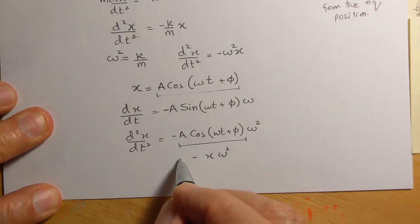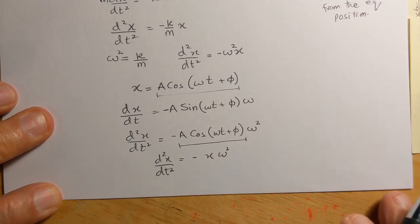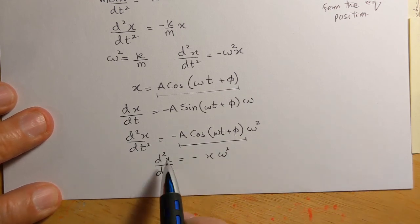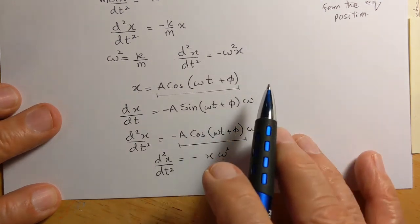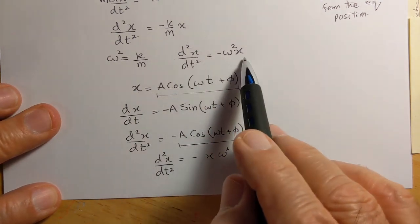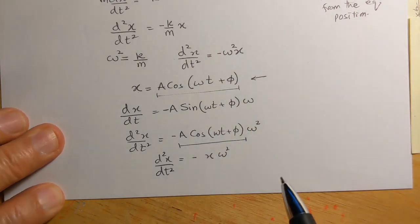have the ω², and that becomes d²x/dt². So the second derivative is -ω²x, which is the same as what we started with, and therefore this is a correct solution.